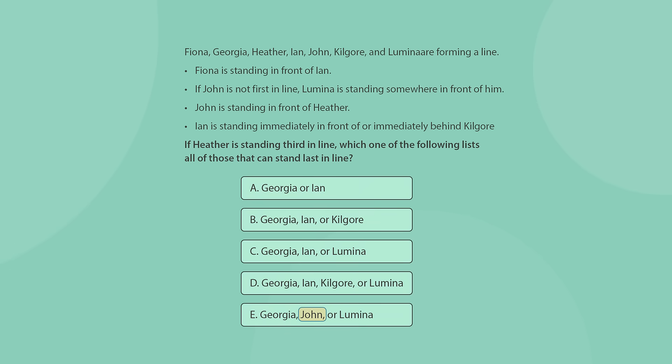John appears in only one answer choice, E. So that is a good indication that he probably cannot be last. Otherwise, the answer is self-evident. And yet, let's check it just to be sure. According to the third rule, John is in front of Heather. If John is in front of anyone, that means he cannot possibly be last. Ian appears in all remaining answers. No need to check for him as well.